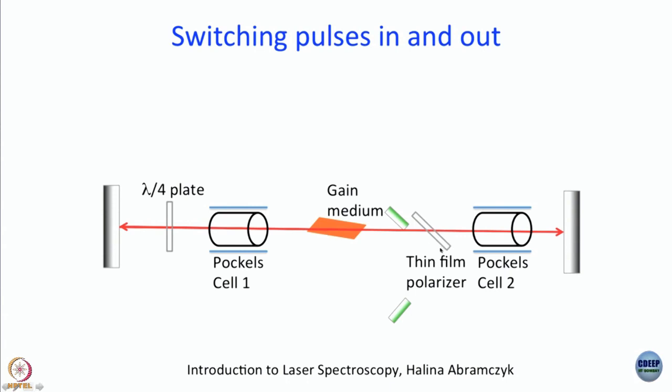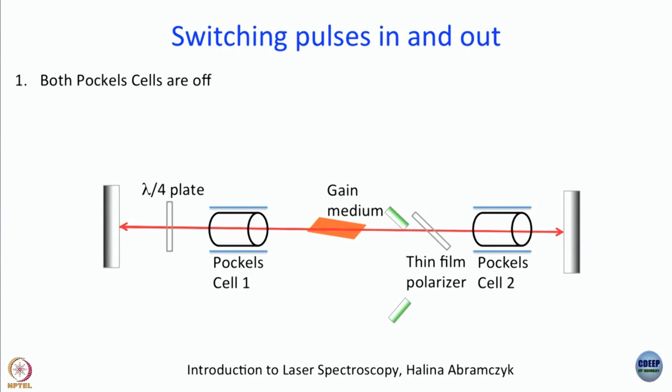To start, both Pockels cells are off — they are just pieces of glass. This is why you cannot use a regenerative amplifier for a 6 femtosecond laser, because the beam passes through significant amounts of glass; 50 femtoseconds is fine. You pump the gain medium, typically not by a CW laser but by a pulsed laser — not an ultrashort pulse, but by our standards an ultra-long pulse, something like 250 nanoseconds.